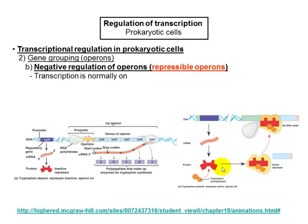The first example is the tryptophan operon — a repressible operon. This means the system is always on; it is constitutively expressed. The tryptophan operon makes tryptophan, which is an amino acid. If this operon is always on, it is always making tryptophan.